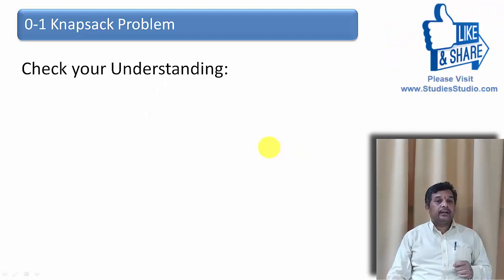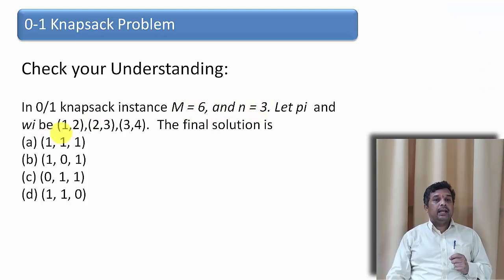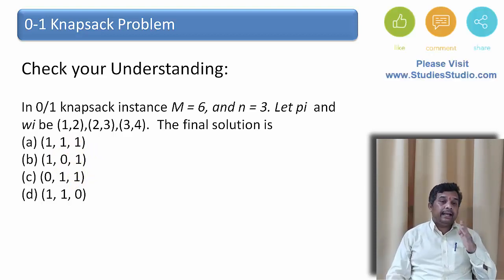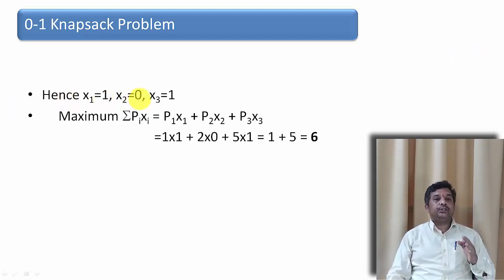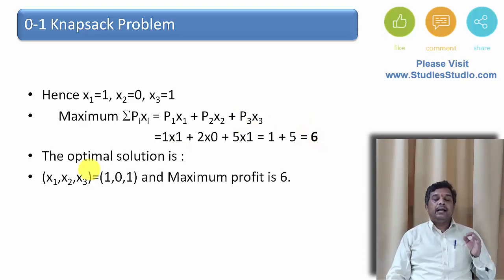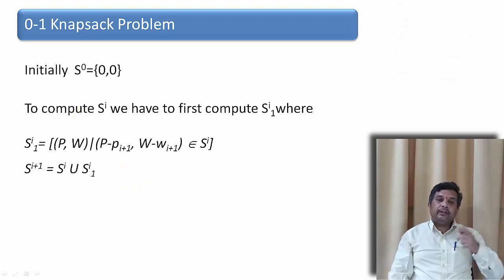Check your progress: given m = 6, n = 3, with profit-weight pairs (1,2), (2,3), and (3,4), find which items to select. Watch till the end of the video for the answer. Our solution gives X1 = 1, X2 = 0, X3 = 1, and the maximum profit is 6. The optimal solution vector is (1, 0, 1).